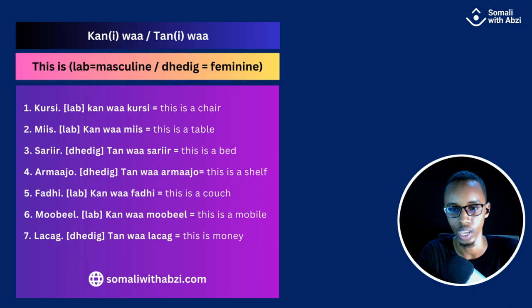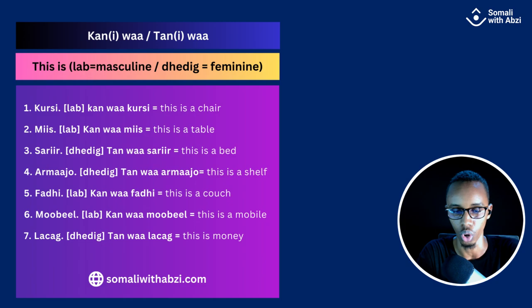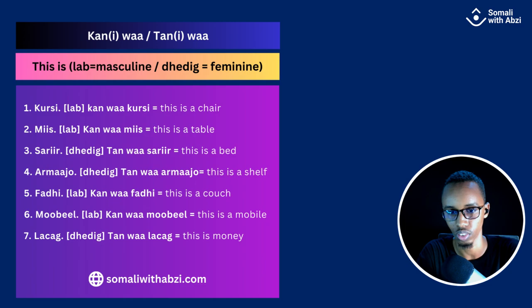Now, 'kan' or 'cani' wa, and 'tan' or 'tani' wa — that means in Somali 'this is.' For masculine nouns you use 'cani' or 'kan,' and for feminine nouns you use 'tani' or 'tan.' 'Lab' means male or masculine, 'dedig' means female or feminine. People in Northern Somalia use 'cani' and 'tani' most of the time, while people in Southern Somalia use 'kan' and 'tan.' In Mogadishu they use the shortened way: kan and tan.